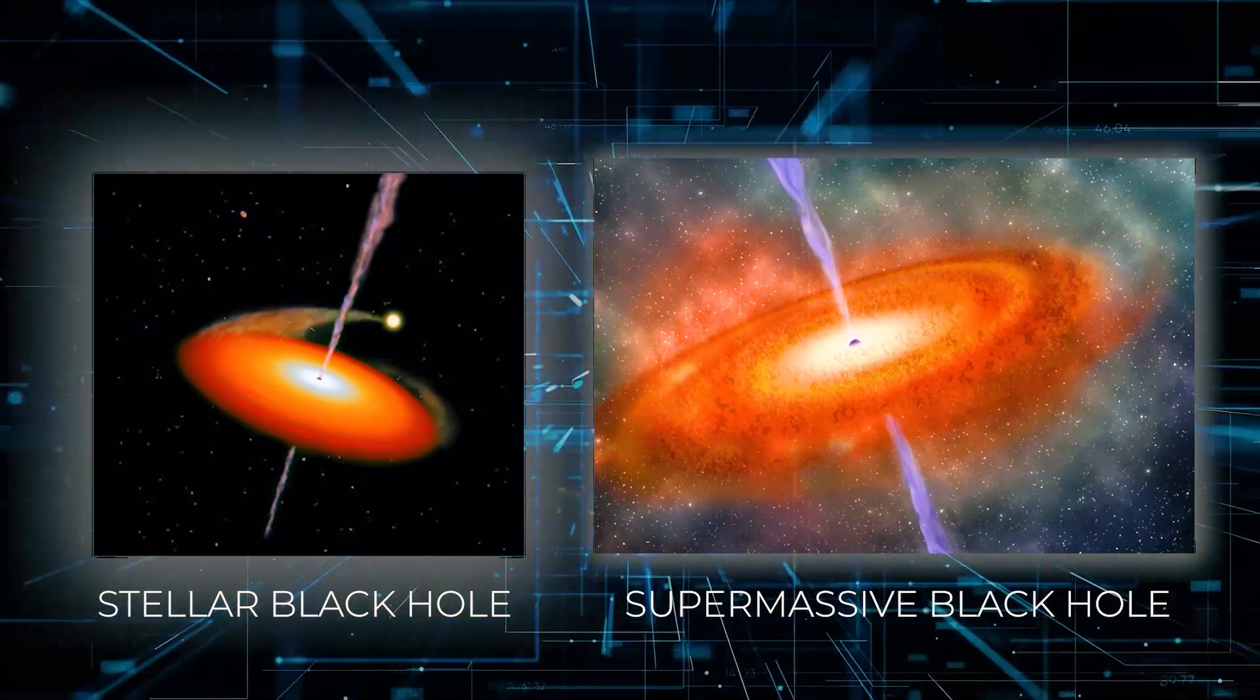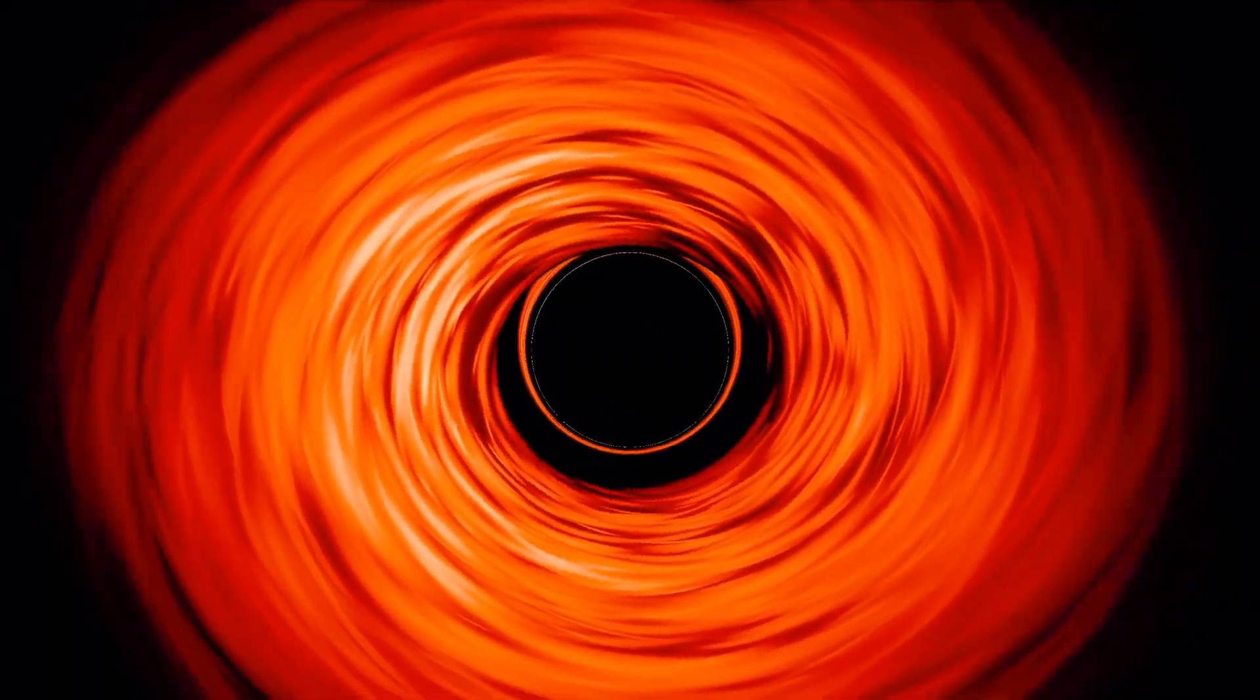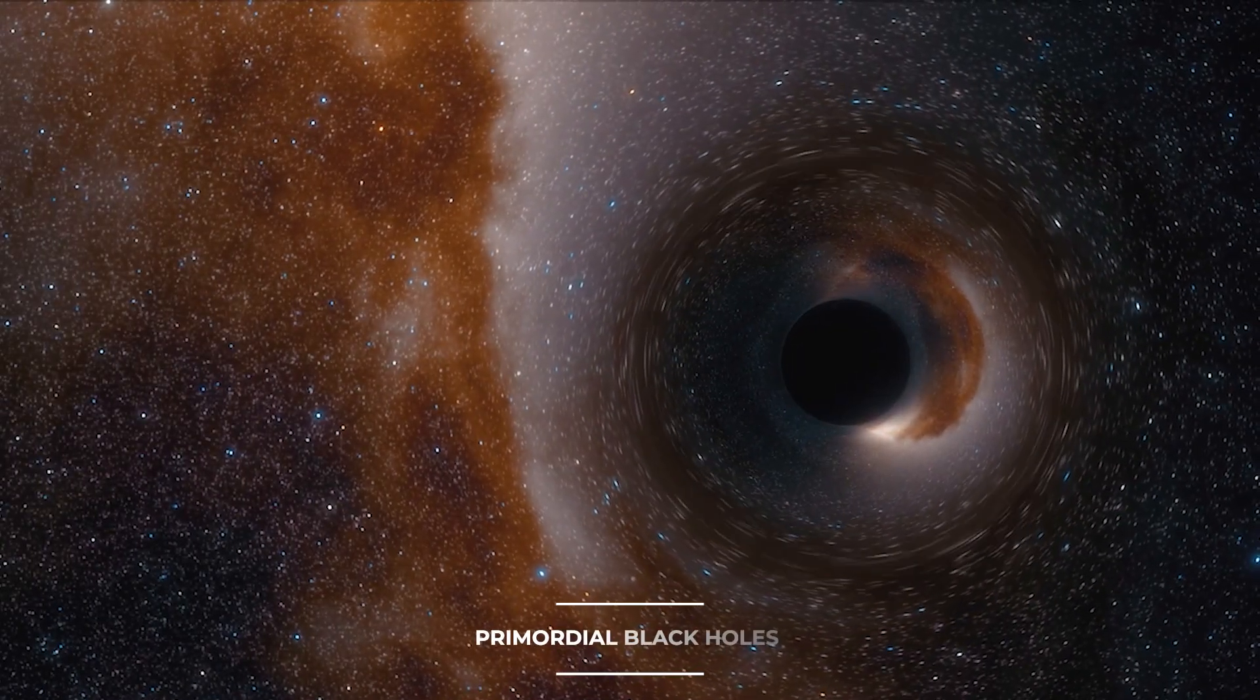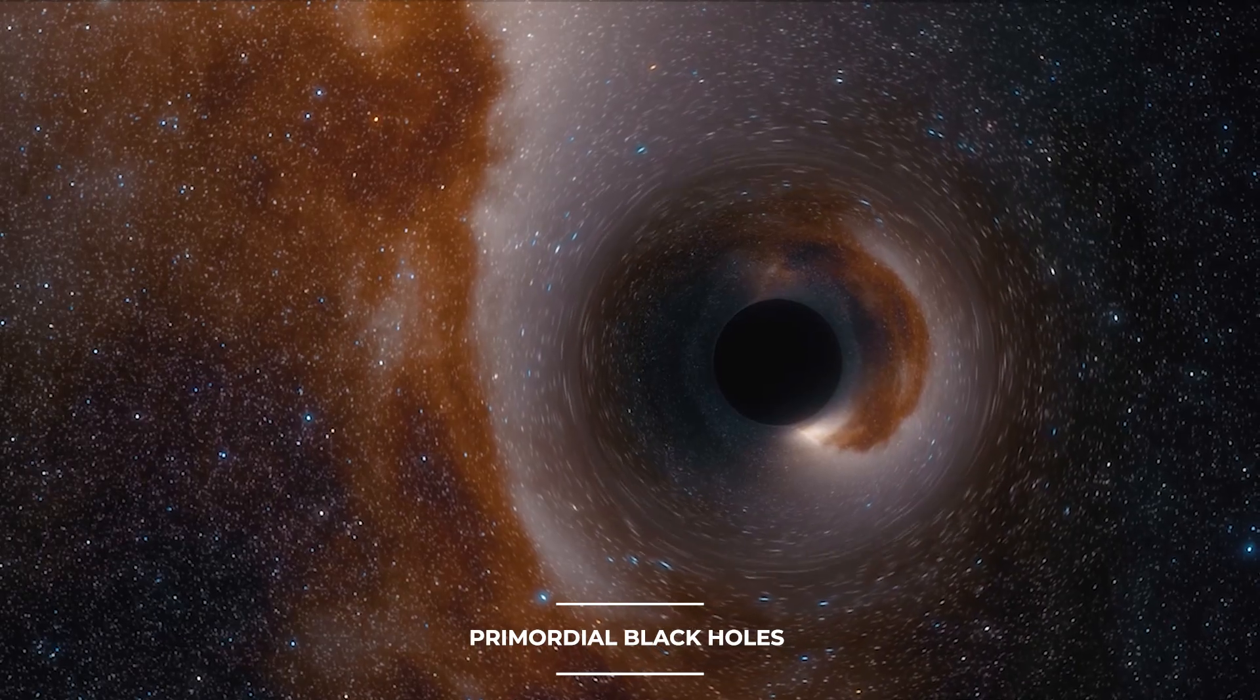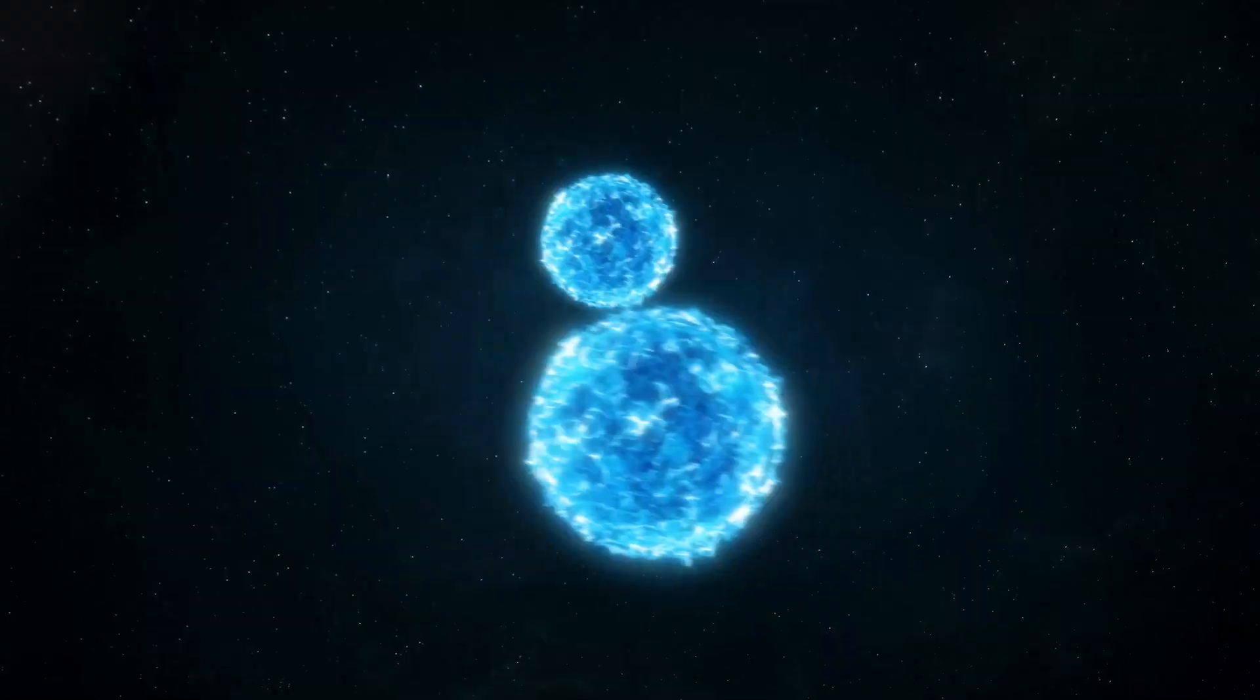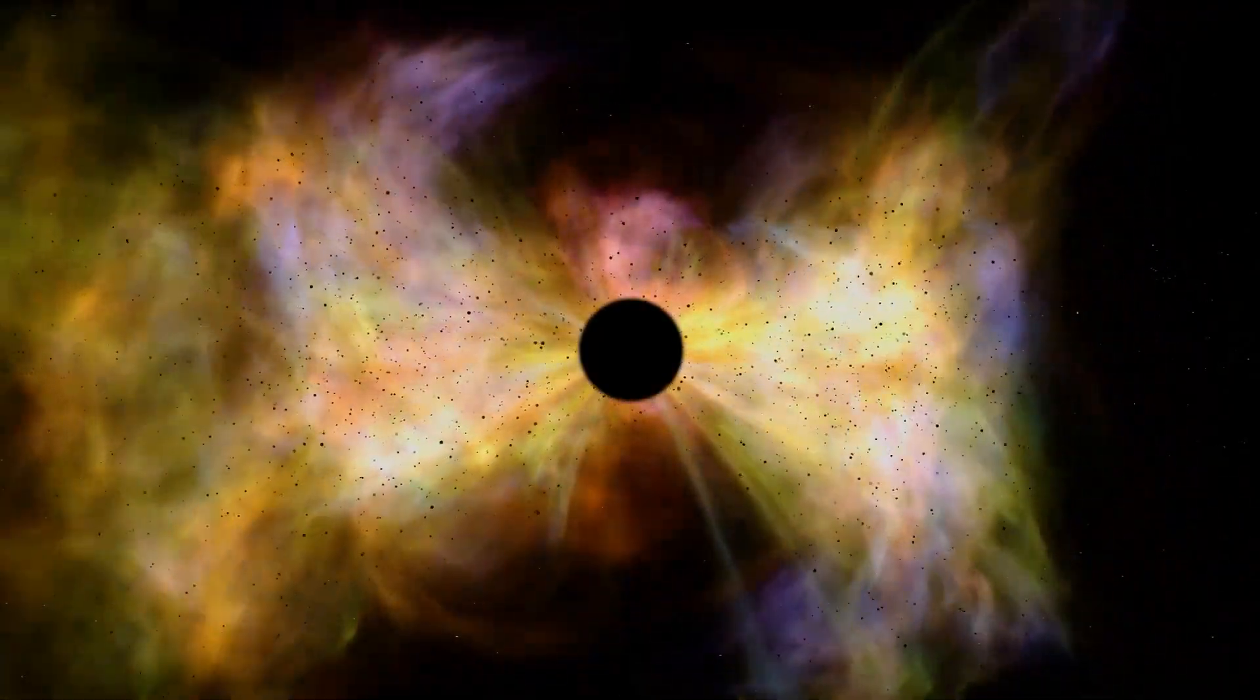Between stellar and supermassive black holes in terms of mass are intermediate black holes. Their origins remain a mystery. Theoretical entities known as primordial black holes are thought to have emerged shortly after the Big Bang. They might have been produced by the gravitational collapse of dense areas in the early universe.